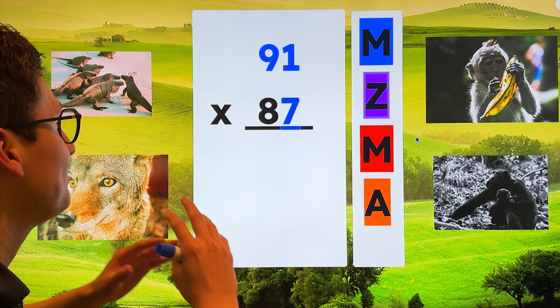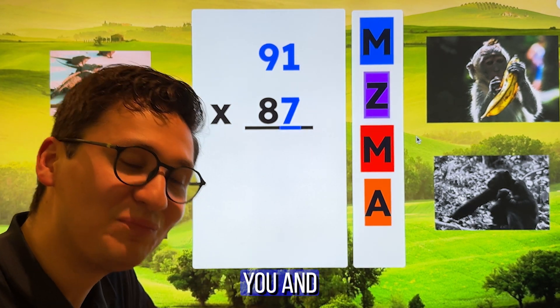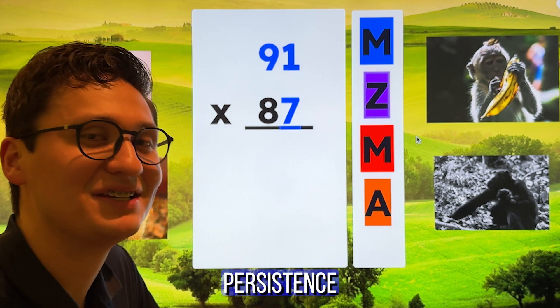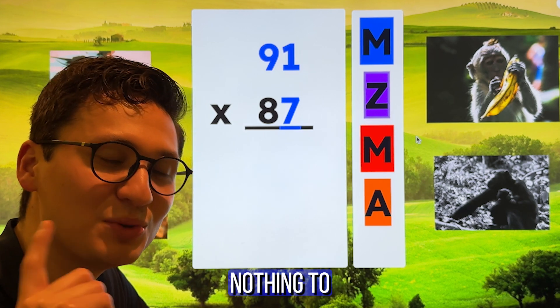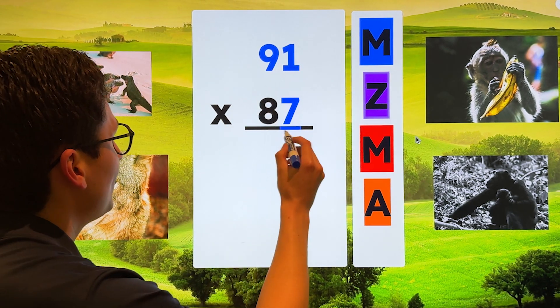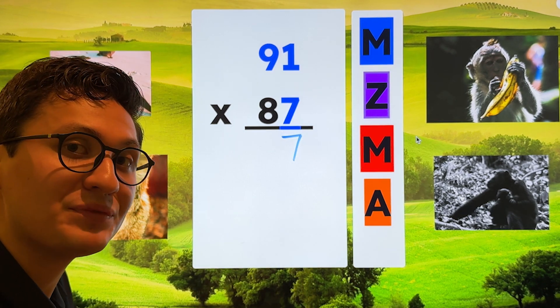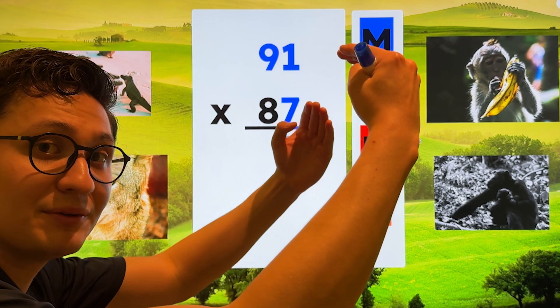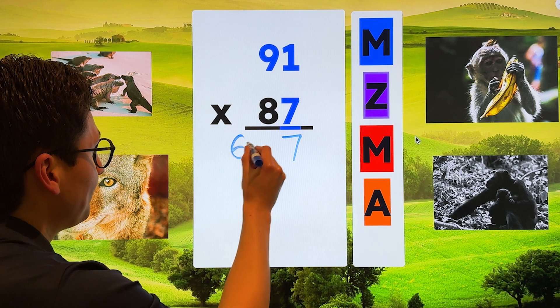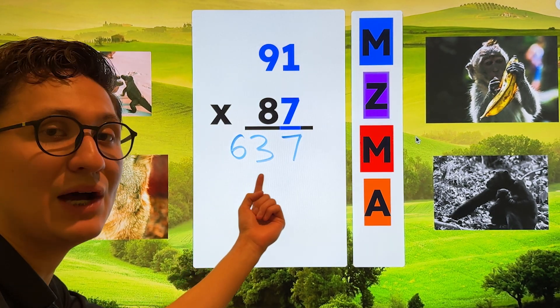Last but not least, we have 91 times 87. If you've made it this far, I want to congratulate you and tell you that your hard work, dedication, and persistence is going to pay off and you have nothing to worry about. Step one, multiply. Seven times one is seven. No need to regroup. You only regroup when the answer is 10 or above. So now we do seven times nine, we get 63. But that's the last number that we have to multiply. So we just put it down here.